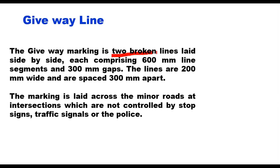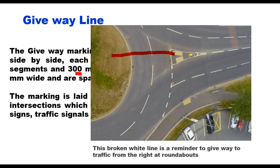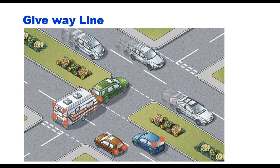The second type is the give way line. Give way line marking is two broken lines laid side by side, each comprising a 600 mm line segment and a 300 mm gap. The lines are 200 mm wide and are spaced 300 mm apart. The marking is laid across minor roads at intersections which are not controlled by a stop sign, traffic signal, or traffic police. These broken lines are a reminder to the driver to give way to traffic from the right at a roundabout — every vehicle approaching the intersection must slow down and give right of way to vehicles coming from the right side.